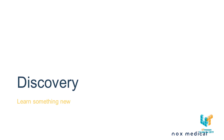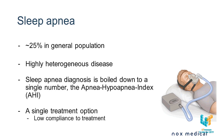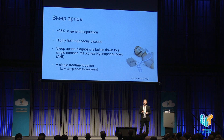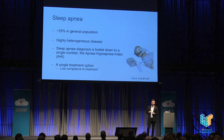Next is the discovery phase — we want to learn something new. I work mostly with sleep apnea, a disease affecting about 25% of the general population involving breathing difficulties during sleep. It's a complicated disease, but diagnosis is boiled down to a single number: the apnea-hypopnea index — how many breathing stops you get per hour per night. Because of this simple diagnostic, there's really only one treatment option: continuous positive airway pressure therapy, a kind of ventilator that helps you breathe during the night. And this treatment has very low compliance.